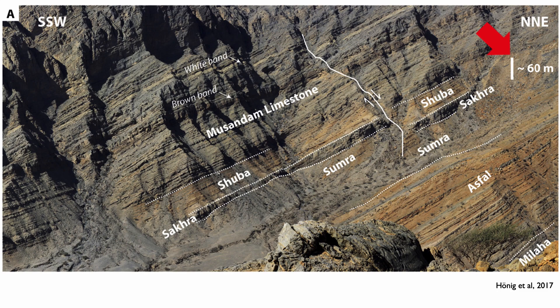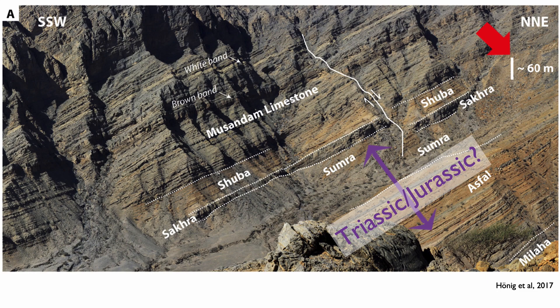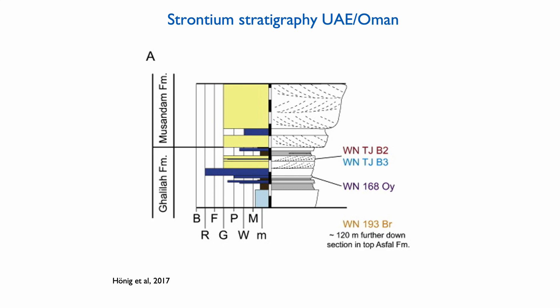We know that somewhere in this package of rocks lies the Triassic-Jurassic boundary, but previous work based on ammonite classification gave very poor indication of exactly where — within a window of 100 to 200 meters. So we tried to apply geochemical methods to narrow down where exactly this boundary should be. My former PhD student Martin Hoenig did this work by collecting shells from different bivalves and applying the strontium isotope method in the Galila Formation to determine more precisely where the boundary lies.